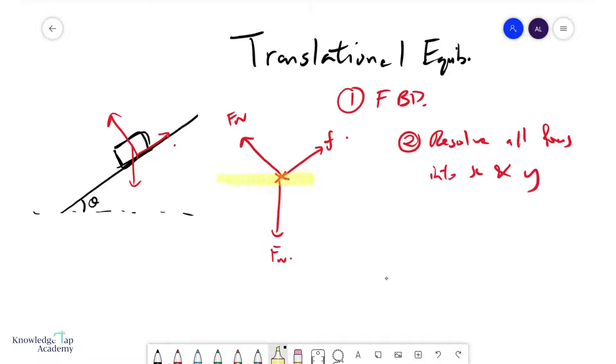So how will that happen? This is my x-axis, this is my y-axis. Now, because I know the angle of the incline is theta, this theta will make its way up there, and it will also make its way here by trigonometry.